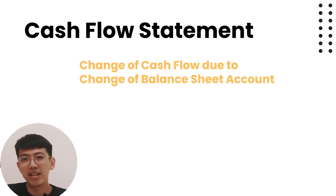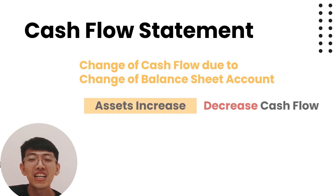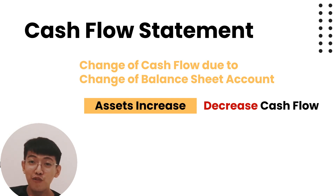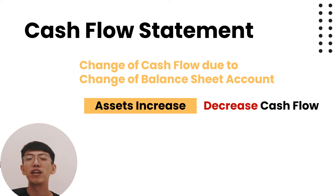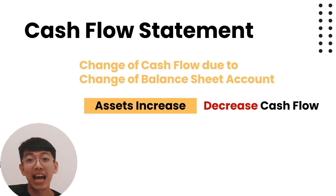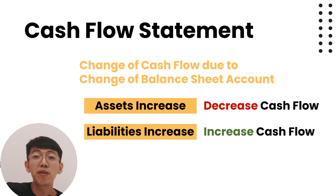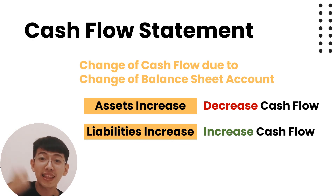What is the impact of balance sheet changes on the cash flow statement? If assets besides cash increase, your cash flow will decrease. For example, when you purchase equipment, your asset increases but you spend money, so cash flow decreases. If liabilities increase, your cash flow increases — for example, borrowing money from a bank gives you cash.